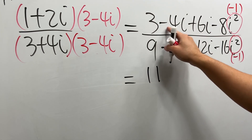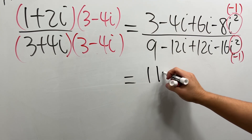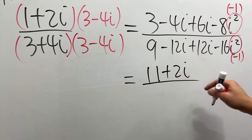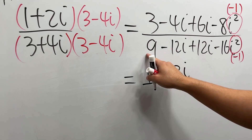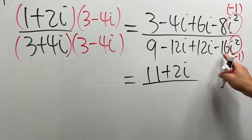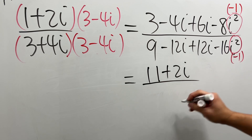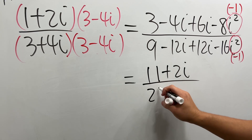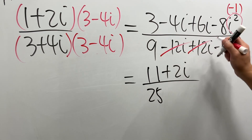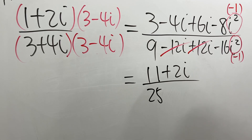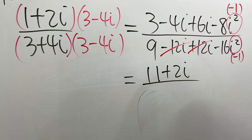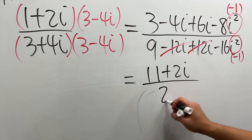And then this and that is plus 2i. Over the bottom, 9 plus 16 is 25. And then this times that just cancels out to be 0. So we have 11 plus 2i over 25.